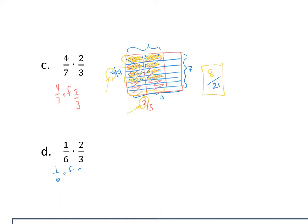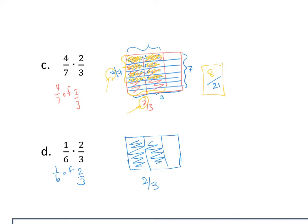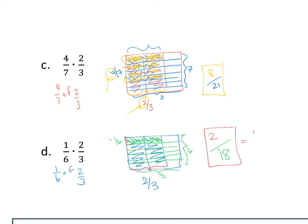One-sixth of two-thirds: we know two-thirds is two columns. Breaking into six rows gives eighteen total pieces — three columns by six rows. We only want one of those six rows from the shaded region: one row by two columns gives two shaded pieces out of eighteen. Two-eighteenths simplifies to one-ninth.